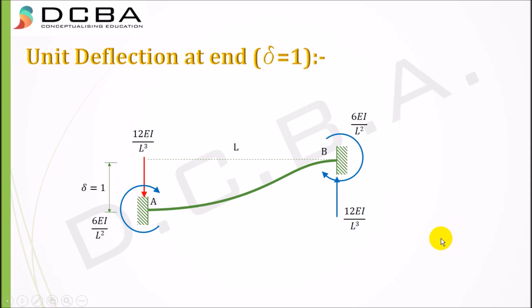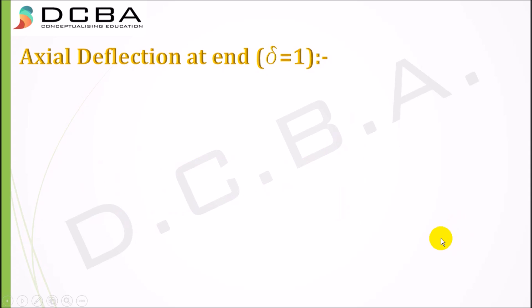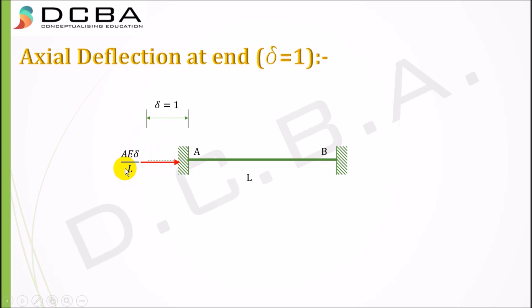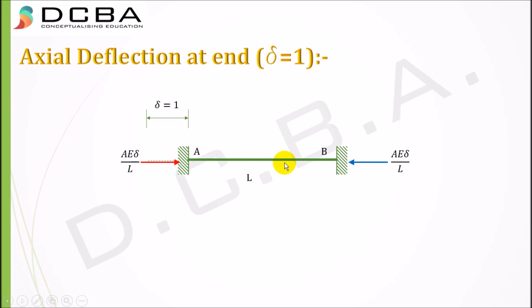Finally, applying an axial force at point A: the magnitude of this force is AE·delta / L. The reaction is opposite in nature — if the force acts to the right, the reaction is to the left, equal in magnitude. When an axial deflection occurs, no moments are formed. This is our first example revisited, confirming that the stiffness value is AE/L when delta = 1. This is the case of an axial force acting and a reaction generating.